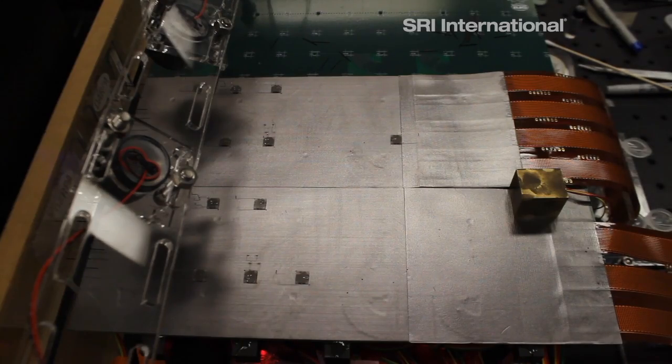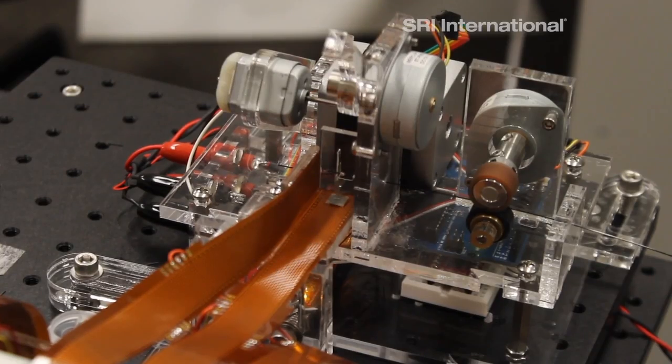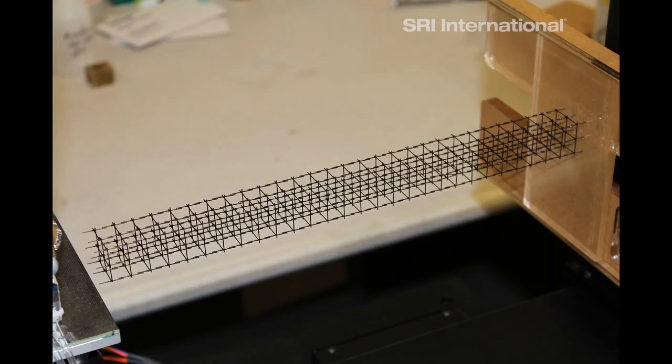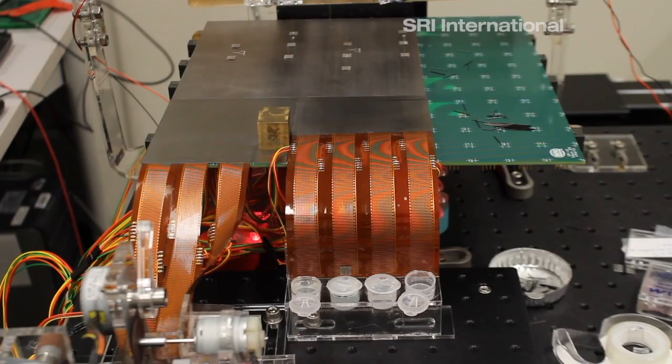The magnetic robots jet around on a circuit board, which generates a magnetic field. Different individuals have different jobs, carrying around different components to build complex structures like this lattice. To build it, some robots deposit glue, while others insert the rods.